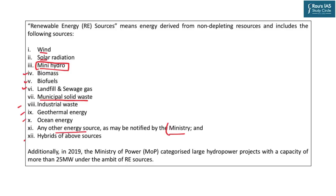All these sources fall under the Ministry of Power under the Electricity Act 2003. In 2019, the Ministry of Power also categorized large hydropower projects as part of renewable energy sources. Previously, only mini-hydro projects up to 25 megawatts were included, but now larger ones are included as well. The key point here is that municipal solid waste is regarded as a renewable energy source under Indian regulation.